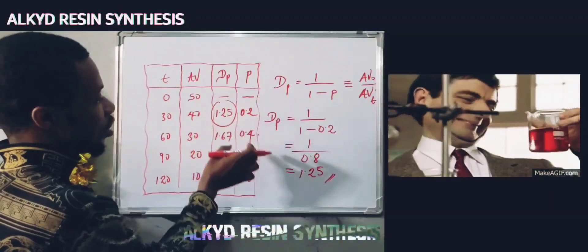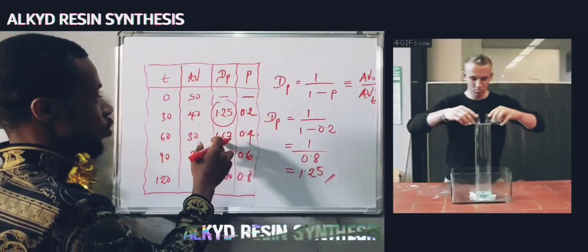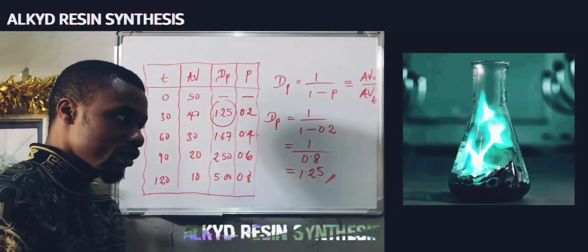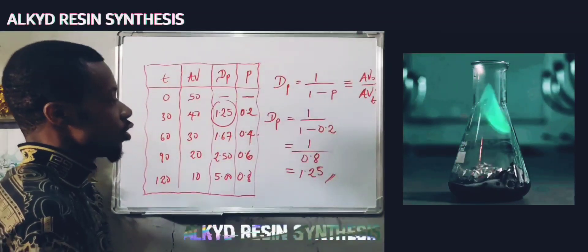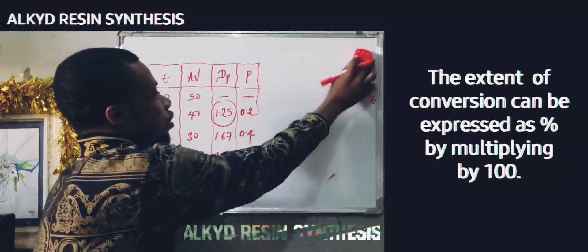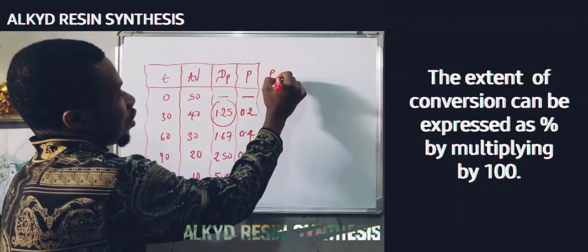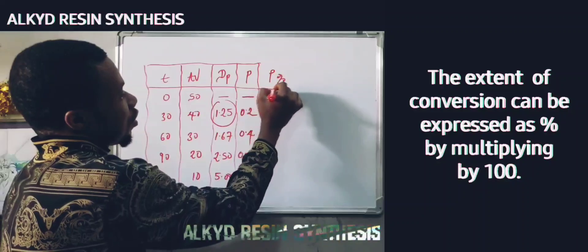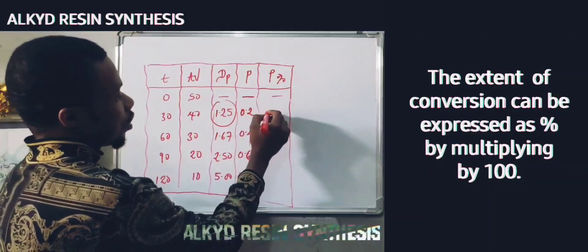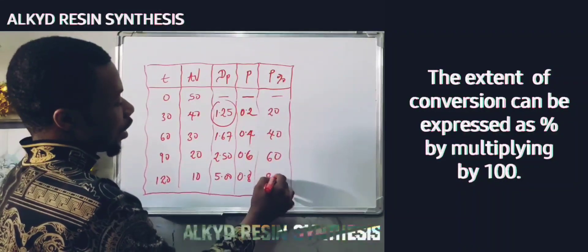This is how you calculate the degree of polymerization and the extent of conversion for alkyd resin synthesis. You can also express the extent of conversion in percentage: at 30 minutes it is 20%, at 60 minutes 40%, at 90 minutes 60%, and at 120 minutes 80% conversion, which is a reasonable amount for the formation of an alkyd resin.